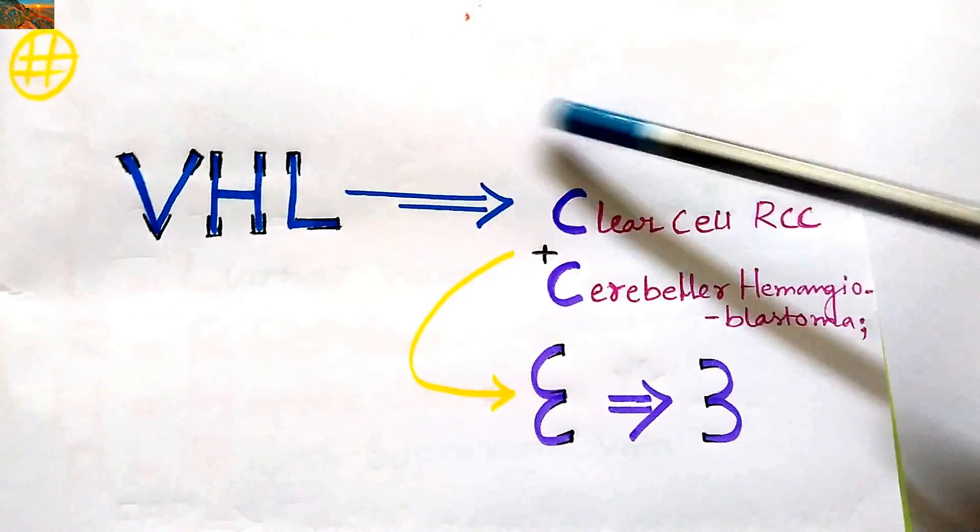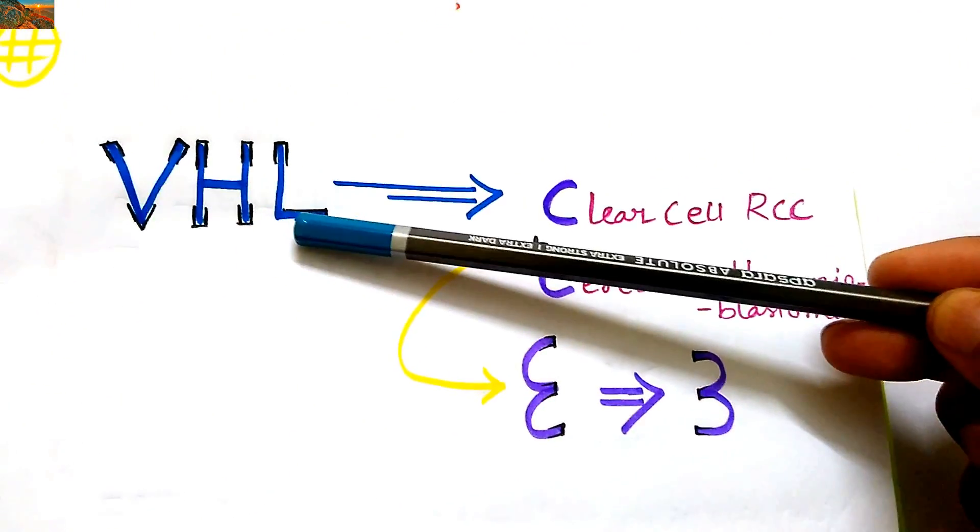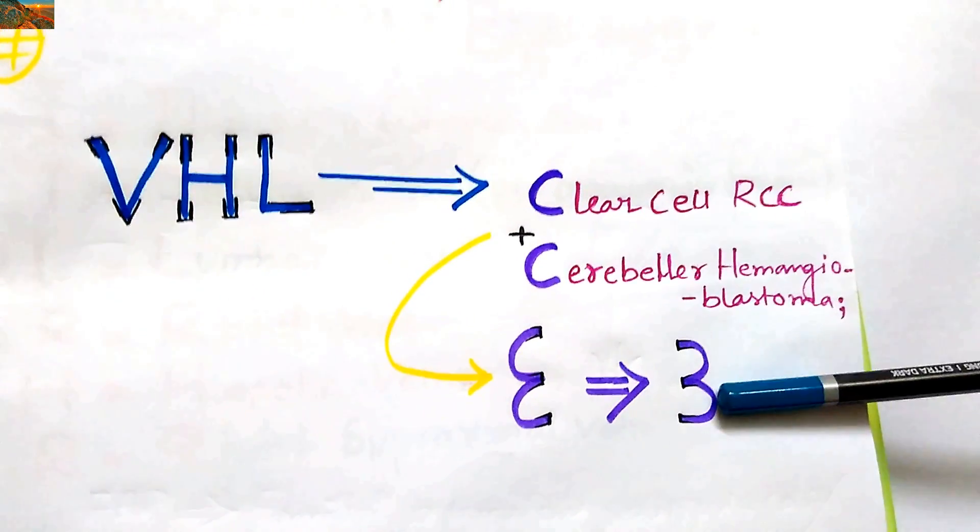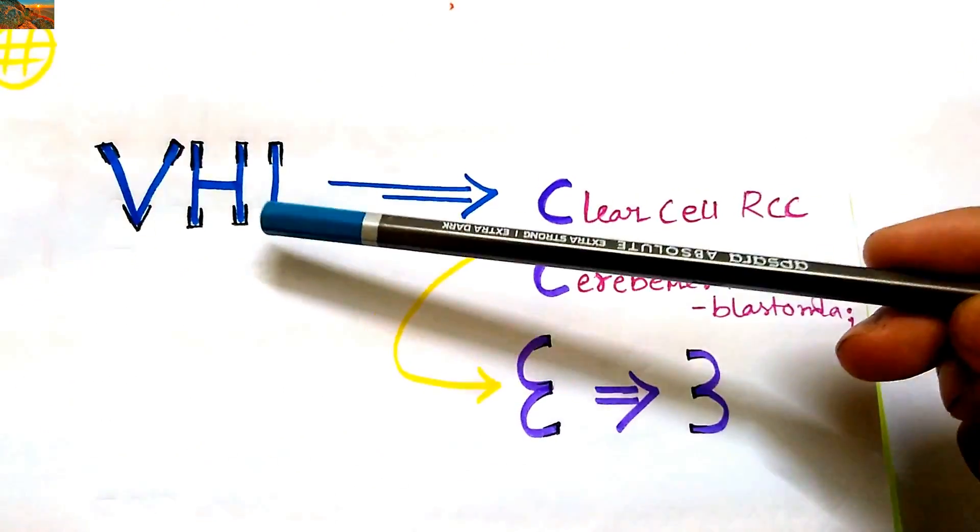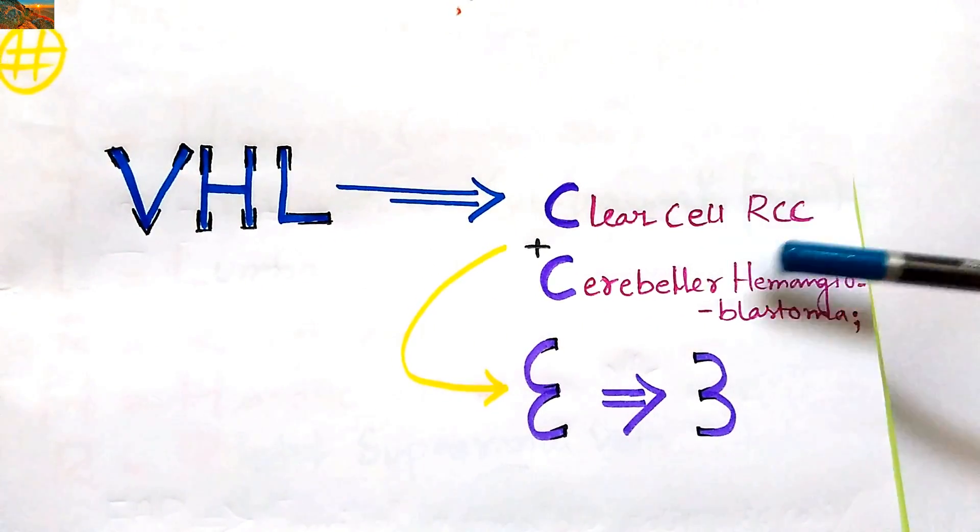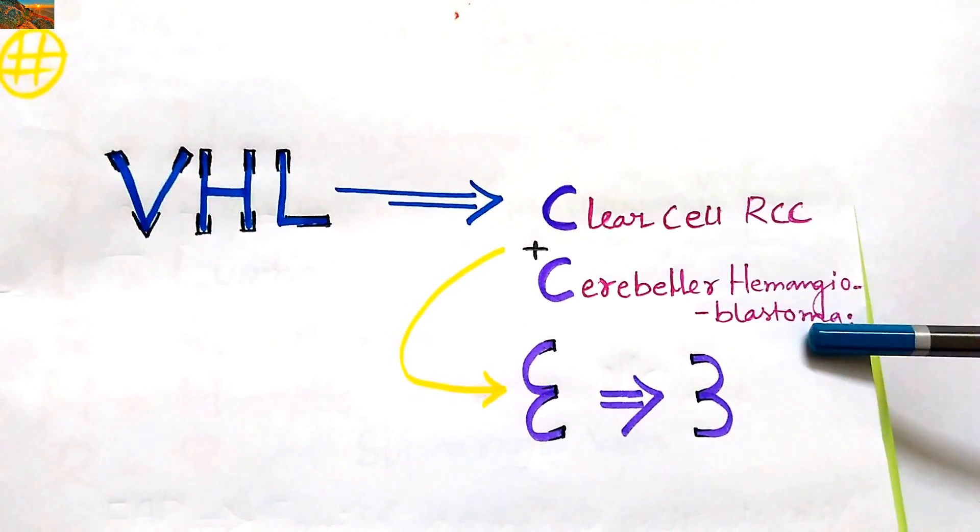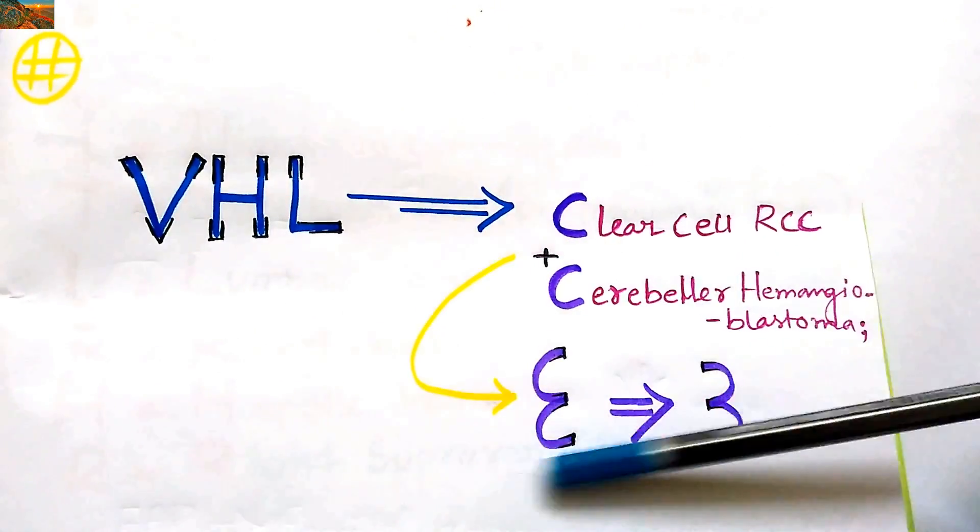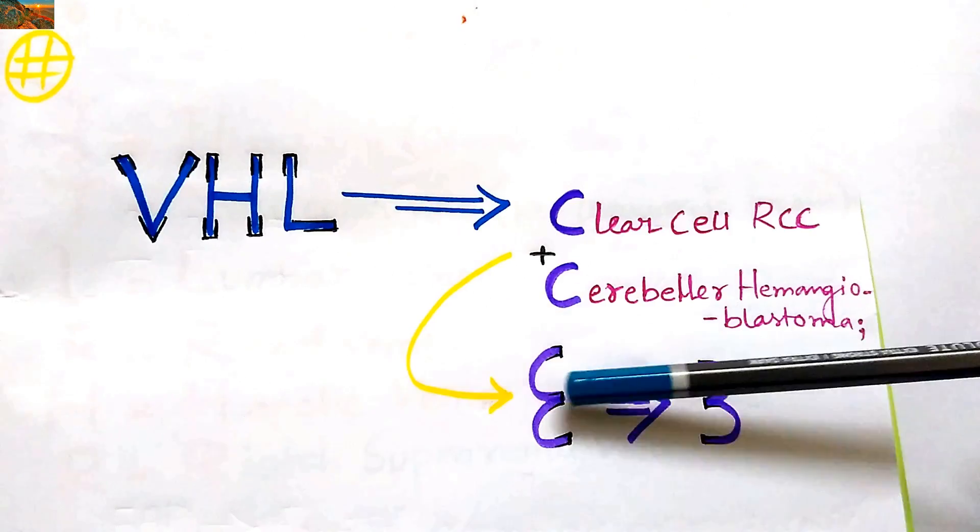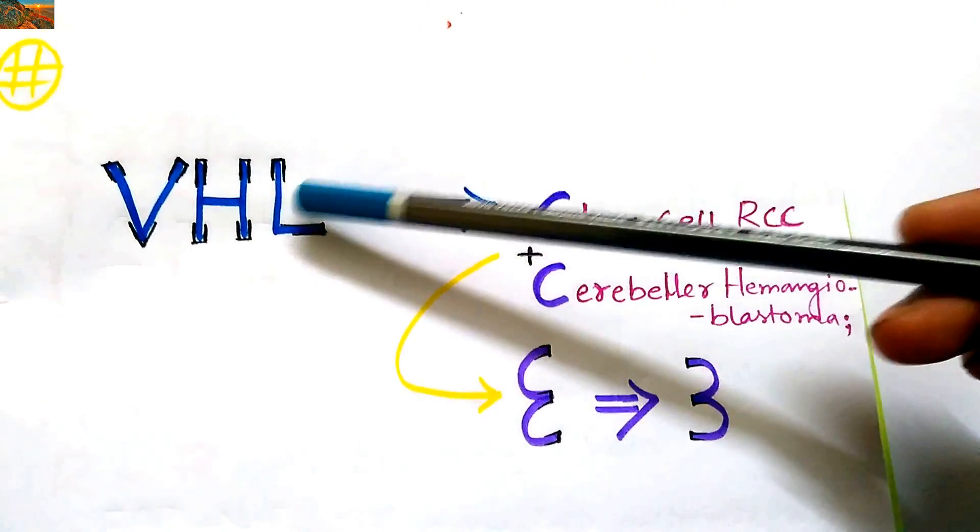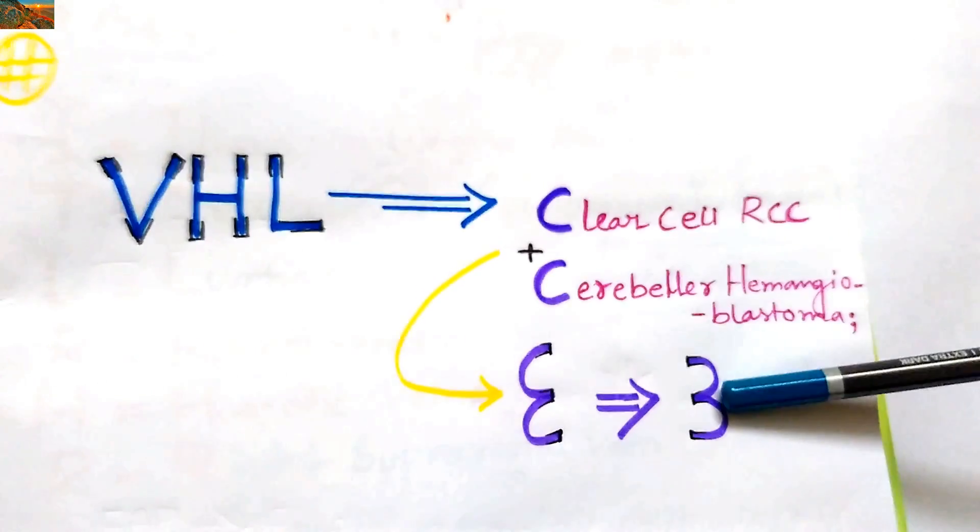Now it is Von Hippel-Lindau gene which is located on chromosome number 3. How do you remember? All of you know that due to Von Hippel-Lindau gene, there is clear cell RCC and cerebellar hemangioblastoma. I just connected these two C's so that it looks like this. And now the mirror image of this looks like 3. So the Von Hippel-Lindau gene is from chromosome number 3.